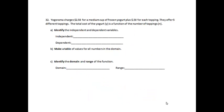All right, problem 32. Yogorama charges $2.50 for a medium cup of yogurt plus $0.50 for each topping. They offer five different toppings. The total cost of yogurt, Y, is a function of the number of toppings, N. First of all, identify the independent and dependent variables. So the independent, remember, is you get to choose.